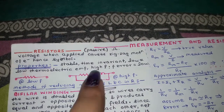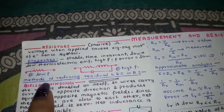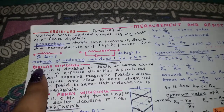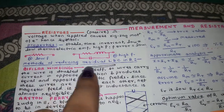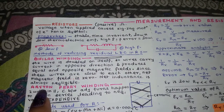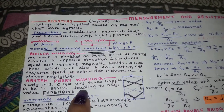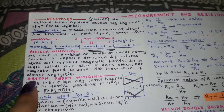At higher frequencies, some undesirable elements are added to the equivalent circuit. We are trying to reduce this inductance (L) and capacitance (C) effect. For reducing these, we have two methods: the bifilar method for reducing the inductive effect, and the Ayrton-Perry winding for reducing the capacitive effect.